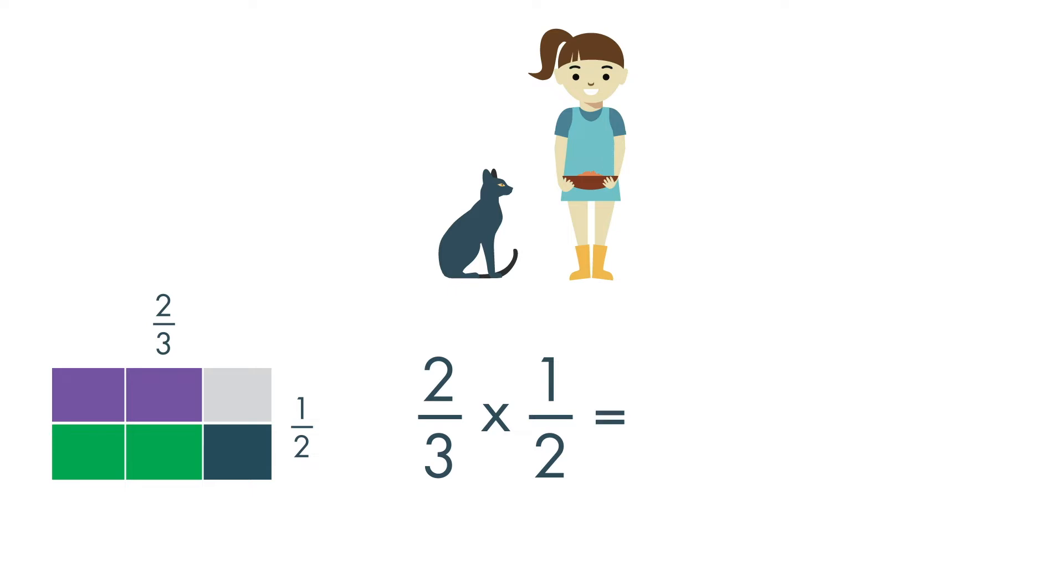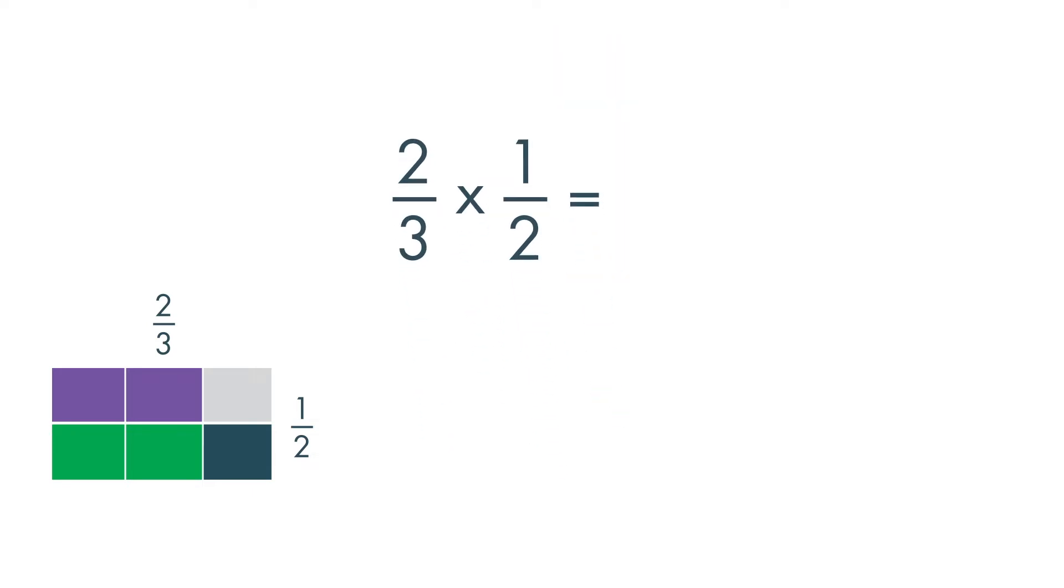How much will she use? To multiply fractions, multiply the numerators and then multiply the denominators. Two times one is equal to two, and three times two is equal to six.